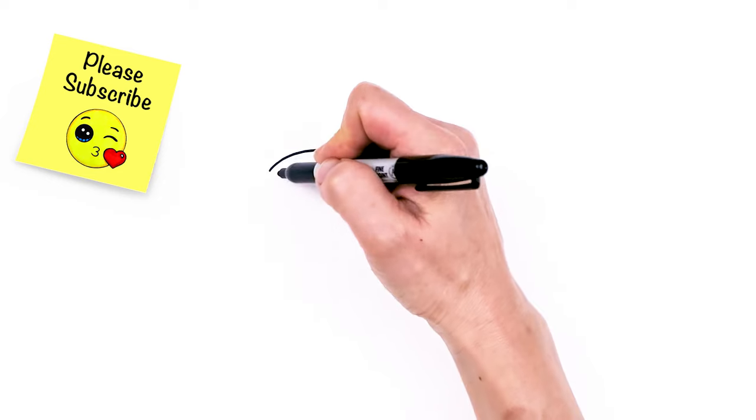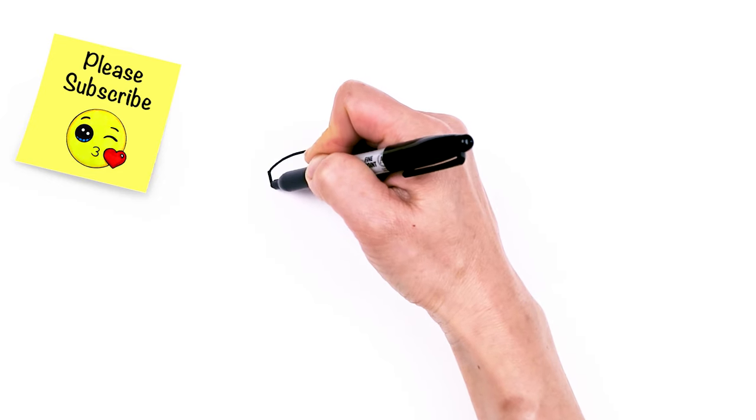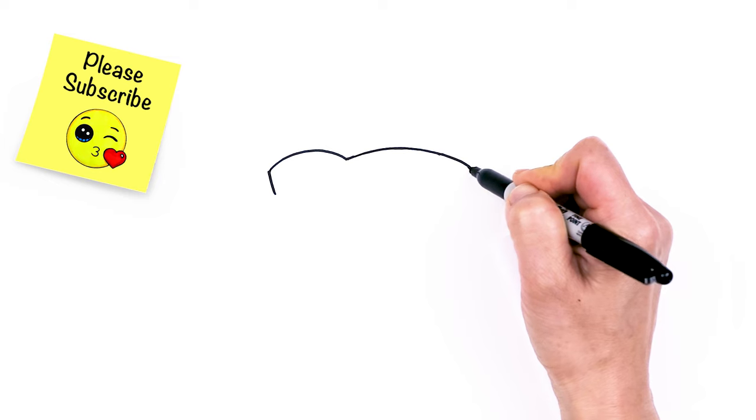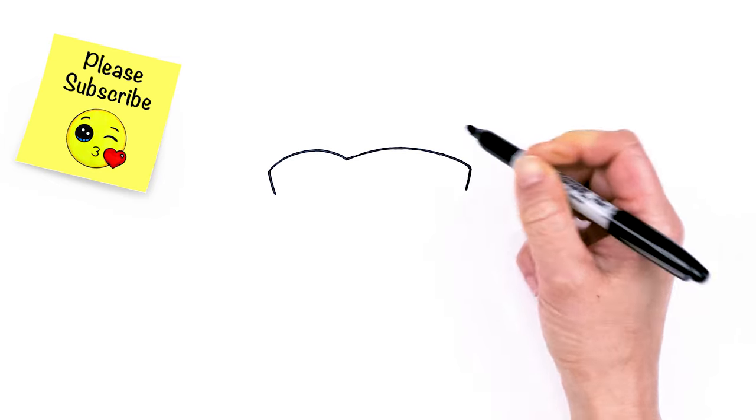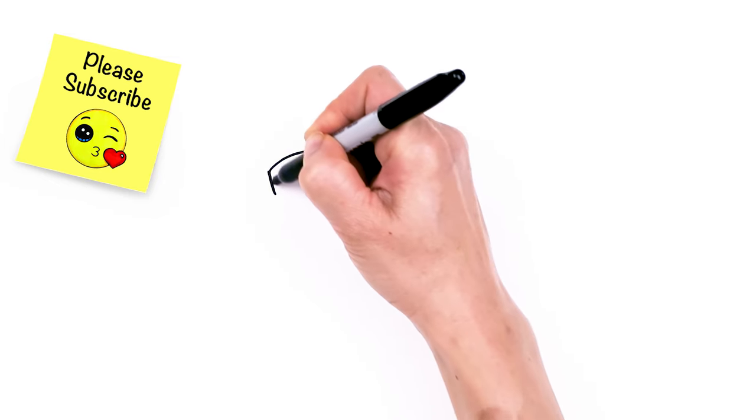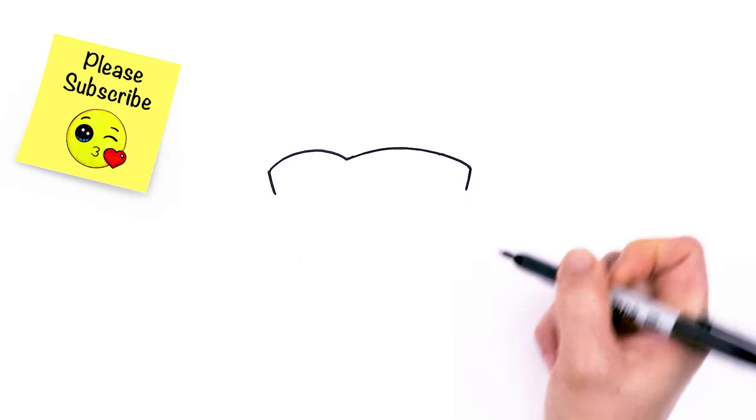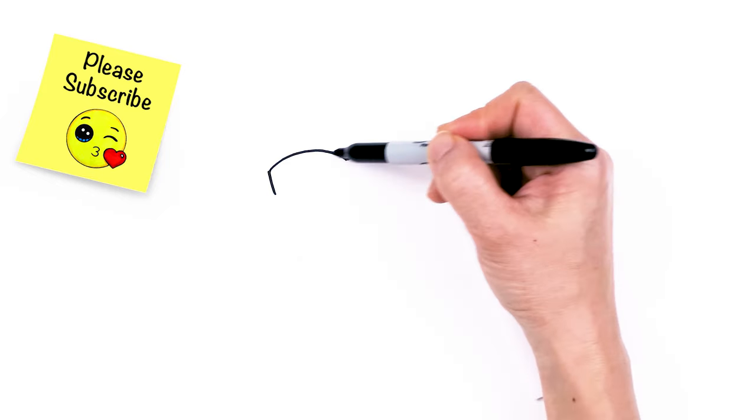From there, I'm going to bring this down. We're going to start to create the body of our crepe. And notice as I draw down, it's kind of at a curve. It's not very straight. I'm just trying to make it a little bit rounder so it's softer and cuter.